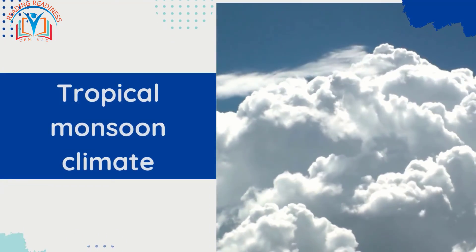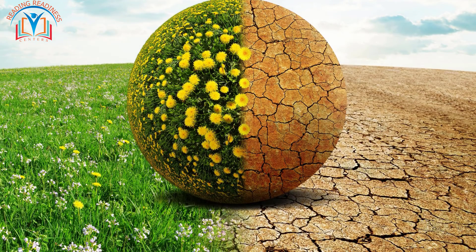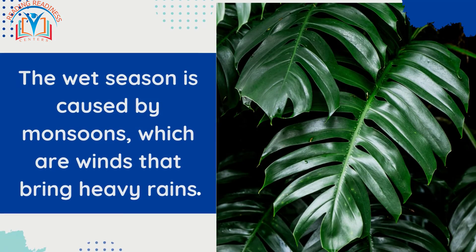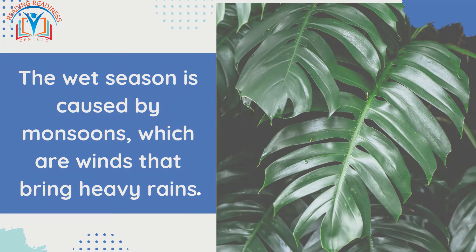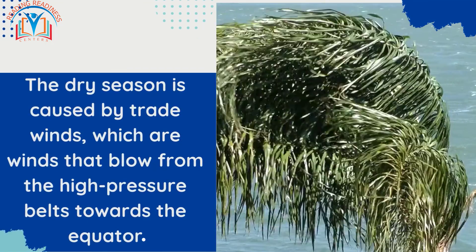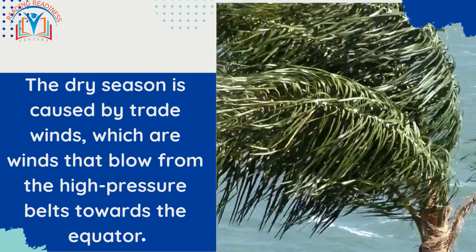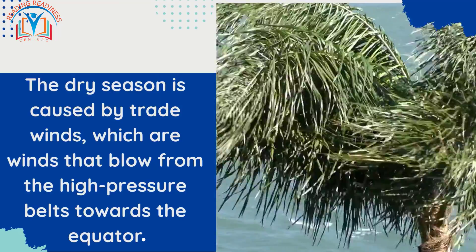Tropical monsoon climates are characterized by wet and dry seasons. The wet season is caused by monsoons, which are winds that bring heavy rains. The dry season is caused by trade winds, which are winds that blow from the high-pressure belts towards the equator.